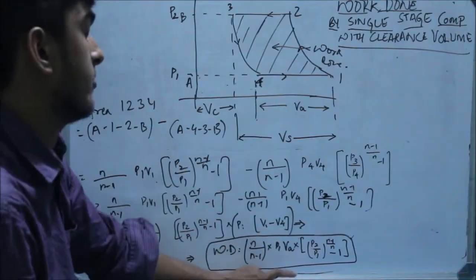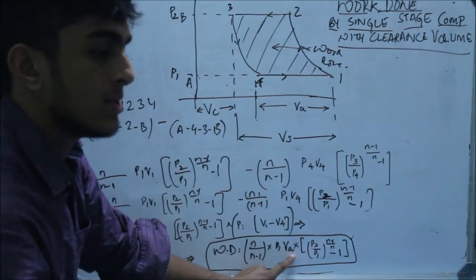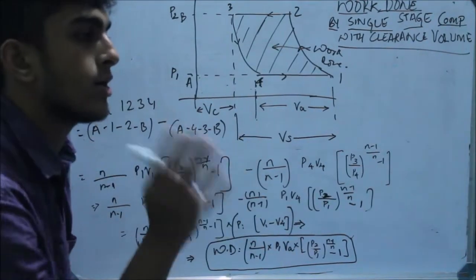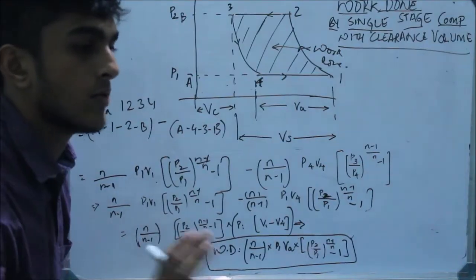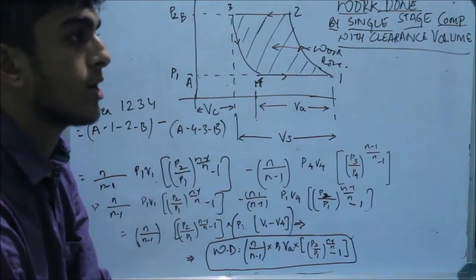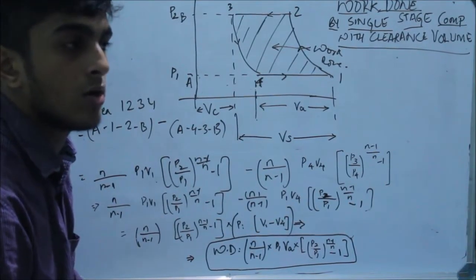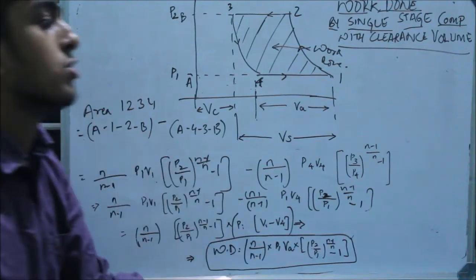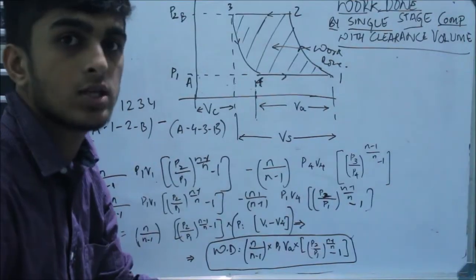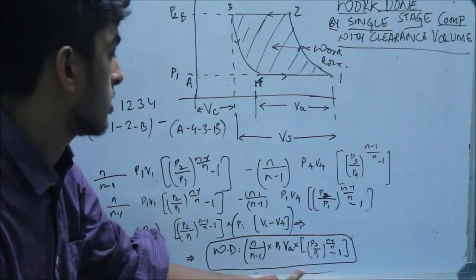So, what do we learn from this expression? We learn that even though there is clearance volume present in the compressor, it does not affect the actual work done on the compressor. There is no change in the work done with clearance volume versus without clearance volume. Clearance volume cannot be removed from a compressor, and this is the final expression for work done.